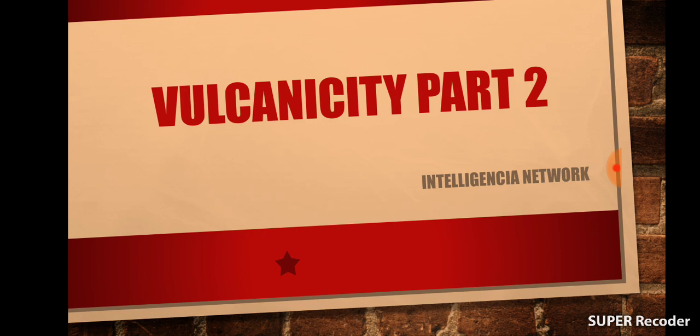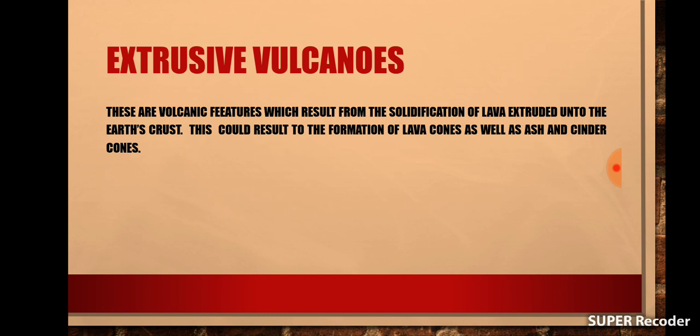In this video, we are going to be describing to you what extrusive volcanoes are, as well as bring out the various types of extrusive volcanoes. A volcano is a shape or a landform that results from the solidification of lava which has been exposed onto the earth's crust during a volcanic process or a tectonic process of volcanicity.